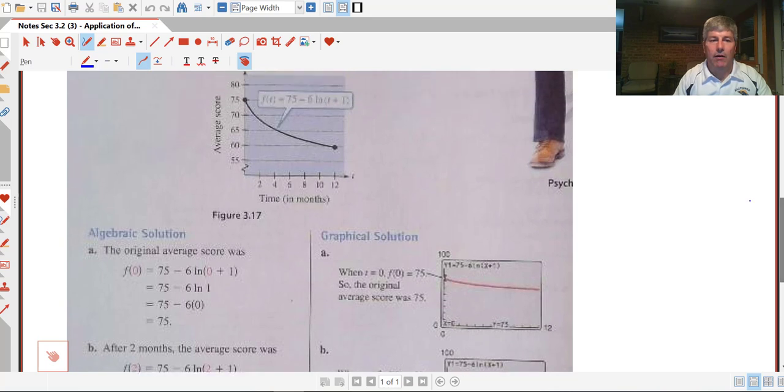As I scroll down here, we put in 0 into our function. So we have 75 minus 6 times the natural log of 0 plus 1. So 6 times the natural log of 1. The natural log of 1 is 0, so we get 6 times 0. 75 minus 0, we get 75. We didn't even need a calculator for that one.